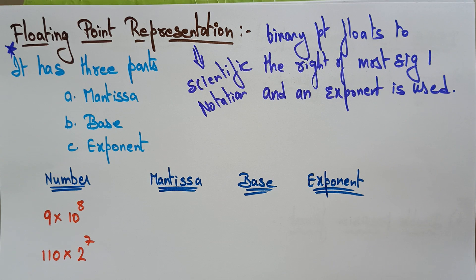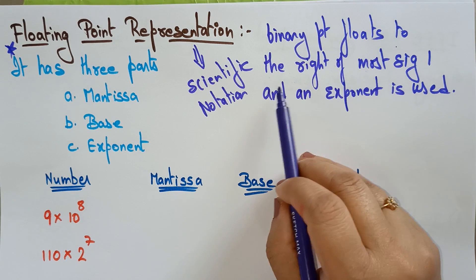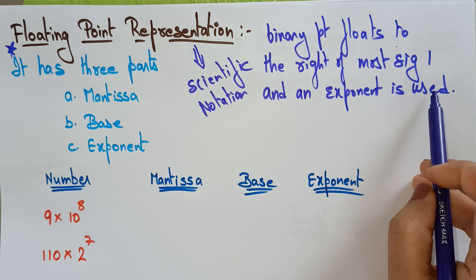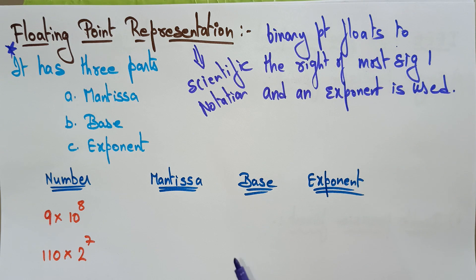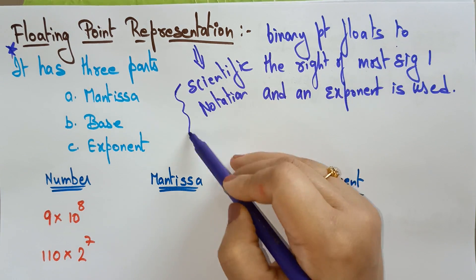Welcome back. Coming to the next point, the most important concept is the floating point representation. In the previous video I explained about the fixed point representation, where the binary number is fixed. In floating point representation, the binary point floats to the right of the most significant one, and an exponent is also used. So we are representing floating point in scientific notation.